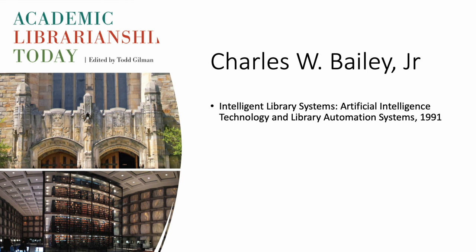All the way back in 1991, Charles Bailey published his article 'Intelligent Library Systems: Artificial Intelligence Technology and Library Automation Systems' in the Advances in Automation Library and Network Journal. Bailey's paper examines key aspects of AI that determine its potential utility as a tool for building library systems, discusses barriers that inhibit the development of intelligent library systems, and suggests possible strategies for making progress in this important area.